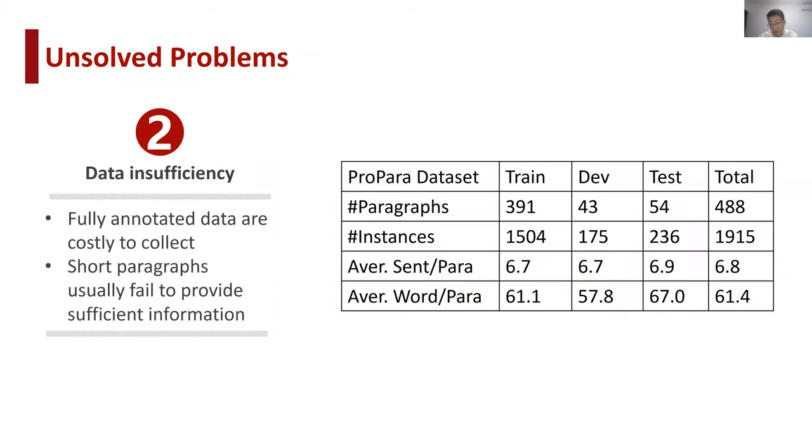Second, data inefficiency hinders large neural models from reaching their best performances. Since data annotations on this task include states and locations of all entities in each time step, fully annotated data are expensive to collect. As a result, existing datasets are limited in size. For example, the benchmark dataset ProPara only contains 488 paragraphs. Moreover, such paragraphs usually fail to provide sufficient information considering the complexity of scientific processes. Each paragraph in ProPara only contains around 60 words on average. This restricts it from describing a complex process in detail. Thus, data enrichment from external knowledge sources is a serious need on this task.